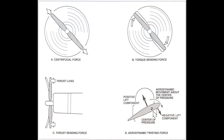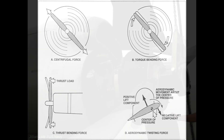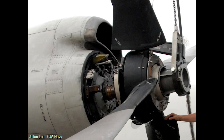The basic structure of a propeller includes several key components: the blades, the hub, and the spinner. The blades are the aerodynamic surfaces that cut through the air, while the hub connects the blades to the engine. The spinner is a streamlined cover that reduces drag and improves the propeller's efficiency.